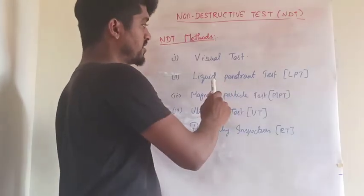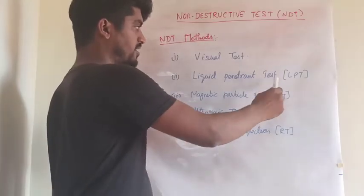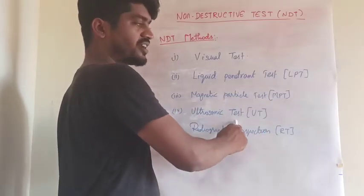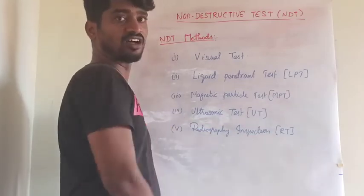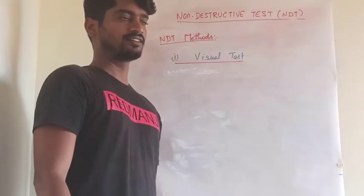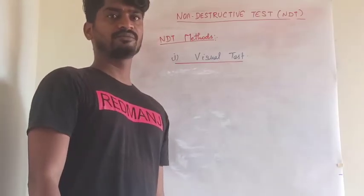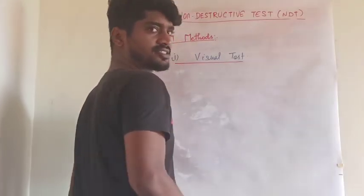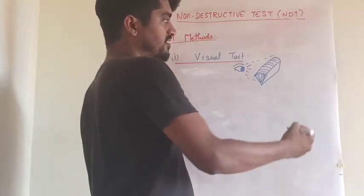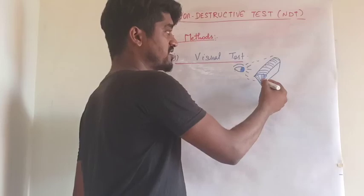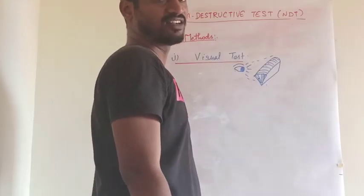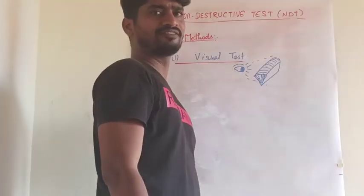The main NDT methods used are: visual test; liquid penetrant test (LPT or PT); magnetic particle test (MPT) or magnetic particle inspection (MPI); ultrasonic test (UT); and radiography inspection (RT). In visual testing, we visually check the welded area with the naked eye. We can only find surface level defects visible to the naked eye. If a defect occurs at the subsurface level, we cannot find it with visual testing, so visual test is used only for surface visual checking.